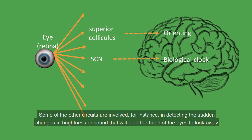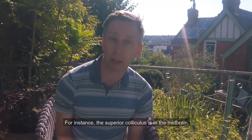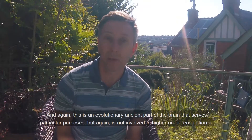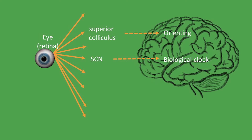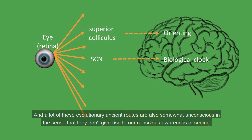Similarly, there are other circuits involved in detecting sudden changes in brightness or sound that alert the head or eyes to look toward flashes and bangs. For instance, the superior colliculus is in the midbrain — an evolutionarily ancient part of the visual brain that serves particular purposes, but is not involved in higher order recognition or detailed visual processes. A lot of these evolutionarily ancient routes are also somewhat unconscious in the sense that they don't give rise to our conscious awareness of seeing.